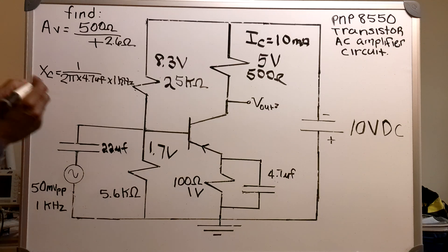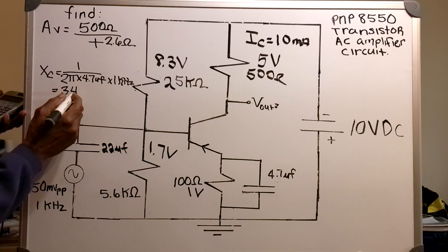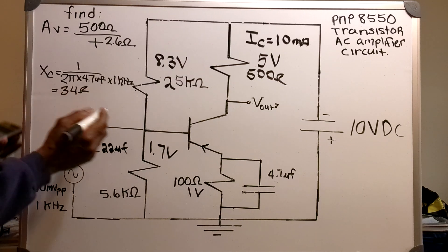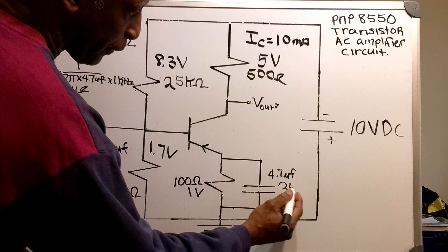That equals about 34 ohms. So my XC reactance is 34 ohms.